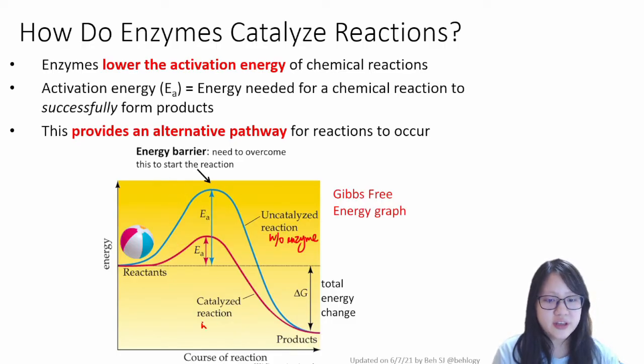However, with the enzyme, so in the catalyzed reaction, the ball only needs to be pushed up a little bit in order to be pushed down the hill. The activation energy here is much lower than the activation energy here, which is high. Now we say that this provides an alternative pathway for reactions to occur, and therefore it speeds up the speed of reaction.